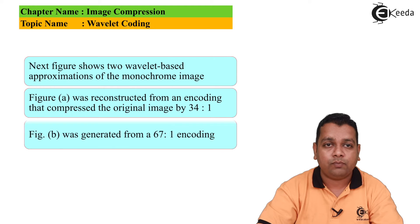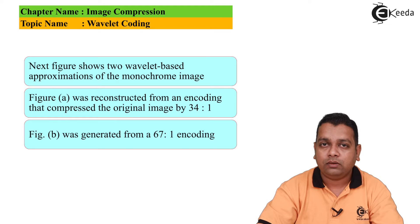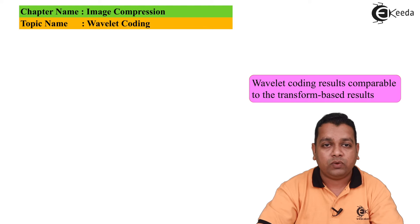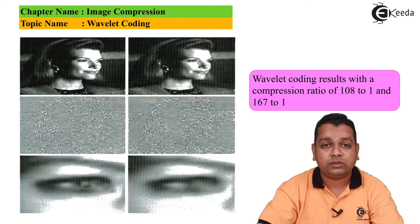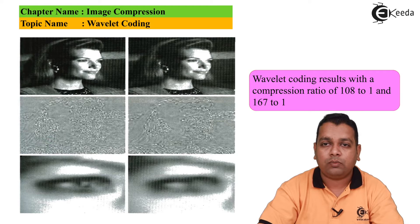Let us look at an example of Wavelet coding. The figure shows two Wavelet-based approximations of a monochrome image. Figure A was reconstructed from encoding that compresses the original image by 34 to 1, whereas figure B was generated from a 67 to 1 encoding. Wavelet coding results are comparable to transform-based results. Parts C, D, E, and F show Wavelet coding results with compression ratios of 108 to 1 and 167 to 1 for the same original image.